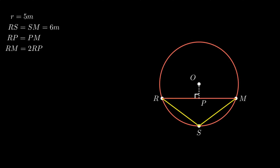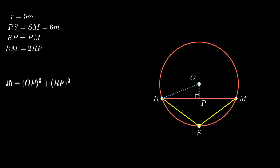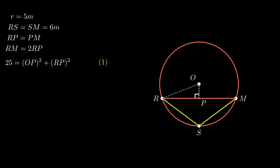To find the length of segment RM, we only need to find the length of segment RP. Joining point R to point O results in a right-angled triangle OPR. By Pythagoras theorem — the square of the hypotenuse equals the sum of the squares of the perpendicular and base — substituting values, we get R squared equals OP squared plus RP squared. As radius equals 5 meters, this equation becomes 25 equals OP squared plus RP squared. This equation can't be simplified further as segment OP and segment RP are different variables.